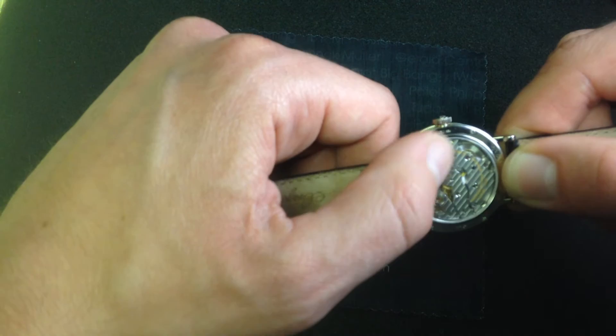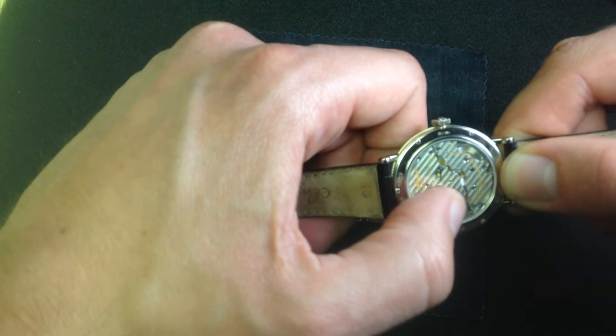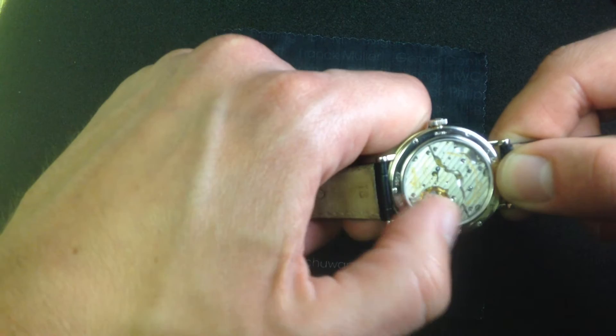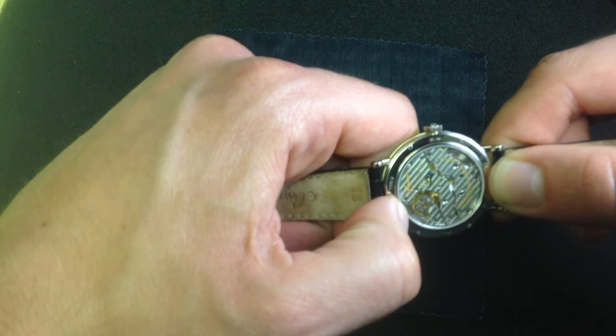Beautifully finished, you can see the linear Côte de Genève. All of the bridges are hand-beveled. It's the gorgeous rounded mirror shine that you only get with hand-beveling, and of course, all the screw heads are polished and campfered in their slots and beveled around their circumference. This is a beautifully rendered traditional dress watch movement.